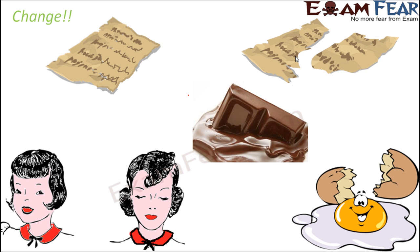Think of an egg. We often prepare omelette from an egg. Don't you think that they are different — omelette and egg? Appearance-wise they are different, taste-wise they are different. Shape, size, everything is different. So there is a change, because the omelette is prepared from the egg. Both are kind of linked, but still they are so much different from each other.